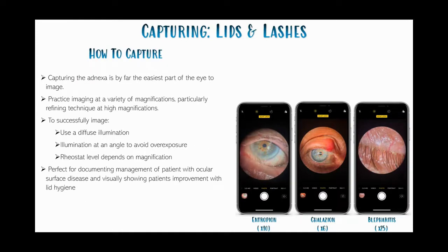The adnexa is by far the easiest part of the eye to image and a perfect starting point, as most of the time you're using diffuse illumination at an angle to avoid overexposure. This technique is particularly useful for those involved in dry eye or MEX clinics to document pathologies. It's really helpful for documenting the condition of the patient's lashes across multiple follow-up visits and is perfect for documenting anything to do with ocular surface disease, showing patients the visual improvement in the state of their eyes between visits.